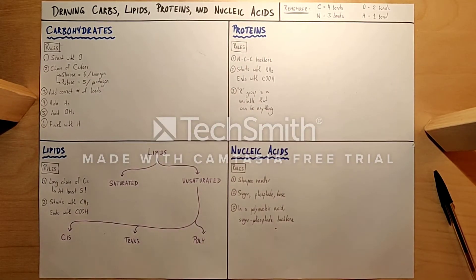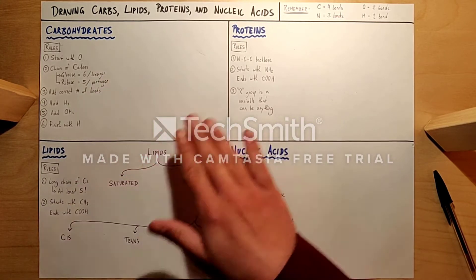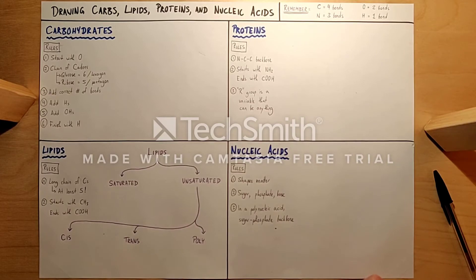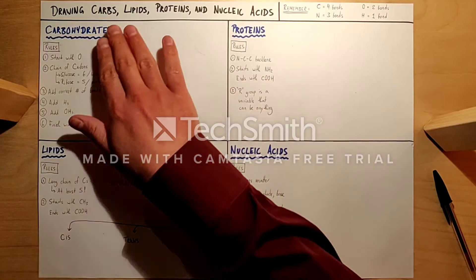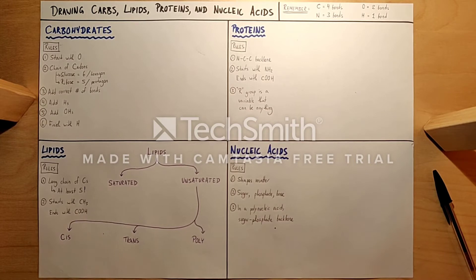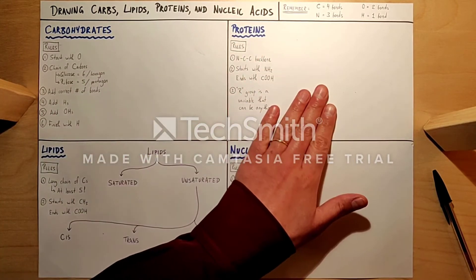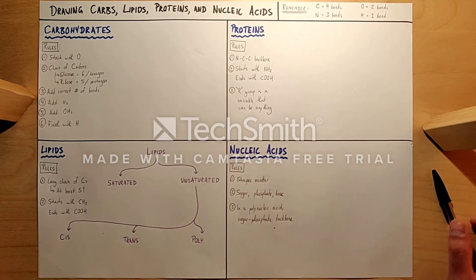You should have already completed all of topic 2.1 and the first video on topics 2.3 and 2.4. These four boxes can be put straight into the table that you already drew, though if they're too big for the table feel free to just write A, B, C, and D and link them to these four. Here we're going to be doing a few drawings: two for carbohydrates, two for proteins, four for lipids, and one for nucleic acids.